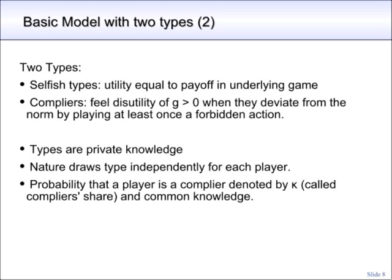There are two types of players. Selfish types, whose utility is just equal to their payoff in the underlying game. And there are compliers, who feel a disutility of g — some positive number — when they deviate from a norm by playing at least once a forbidden action. Types are private knowledge, and nature draws types independently for each player. The probability that a player is a complier is denoted by kappa, and we call kappa the complier's share. We assume that kappa is common knowledge, so a player doesn't know the types of the other players, but knows the probability that another player is a complier or selfish — he has an idea of the distribution of types in the society.